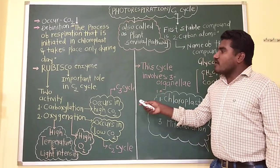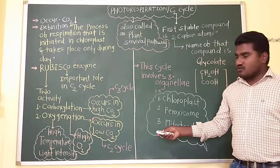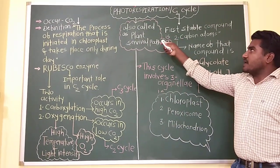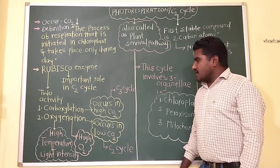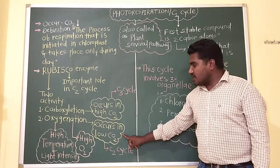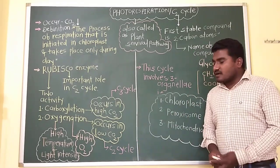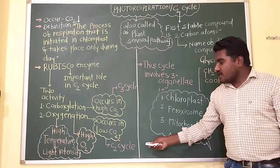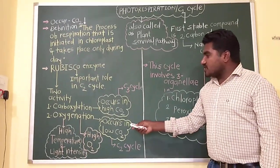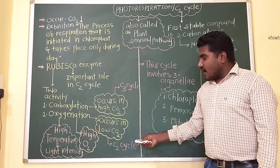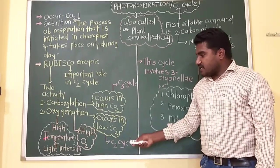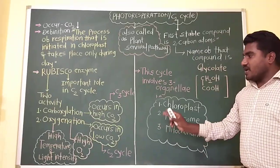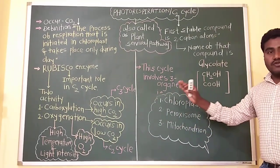Rubisco also performs another activity, that is oxygenation. Oxygenation activity is performed when photorespiration occurs. Where the concentration of carbon dioxide is less, oxygenation activity of the rubisco enzyme is more, and the C2 cycle or photorespiration is favored. Oxygenation activity is increased under high oxygen concentration, high temperature, and high light intensity.